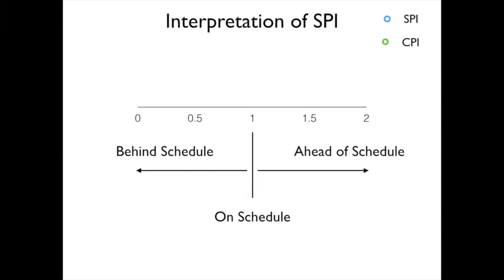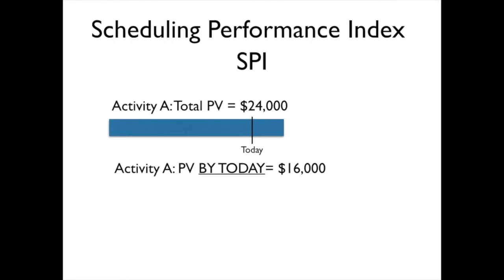Let's take a look at the calculation of SPI. Here I have an activity, and its total planned value is $24,000. However, by this particular point in time, by today, I was anticipating to have spent $16,000 on this. That's my budgeted amount for the work that was scheduled, or we would say planned value by today, was $16,000.